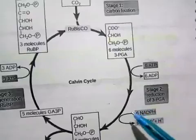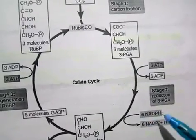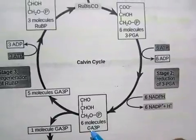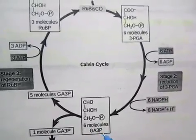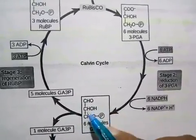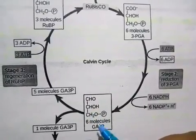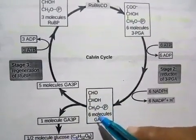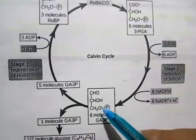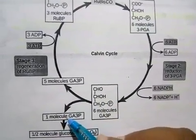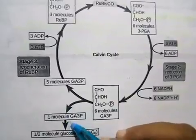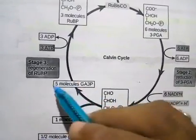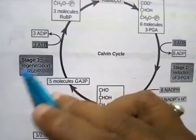NADPH is used here. The 3-phosphoglycerate (3PGA) is converted to glyceraldehyde 3-phosphate, which is a carbohydrate. One molecule of glyceraldehyde 3-phosphate comes out of the cycle, while the remaining 5 molecules are used to regenerate RUBP.